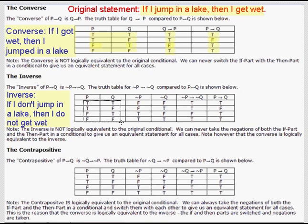Again we have our four possibilities for P and Q. In this table we need columns for negation of P and negation of Q. We get those by negating the P values — true, true, false, false — to get false, false, true, true, and likewise for the negation of Q column. The if-then is only false if the if part is true and the then part is false, and that only happens in the third row where negation of P is true and negation of Q is false. So we have true, true, false, true for the inverse, compared to true, false, true, true for if P then Q. This shows the statement and its inverse are not logically equivalent.